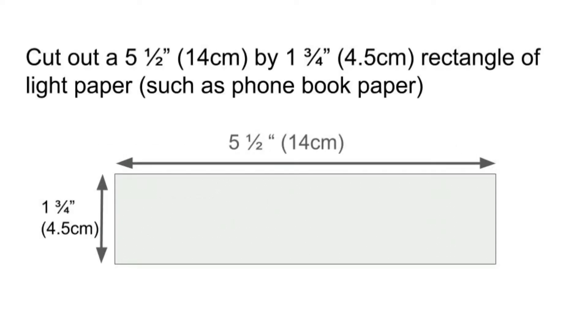To build the paper airplane, we first cut out a strip of paper of dimensions one and three-quarters inches by five and a half inches. The paper should be very light newsprint, such as phone book paper.